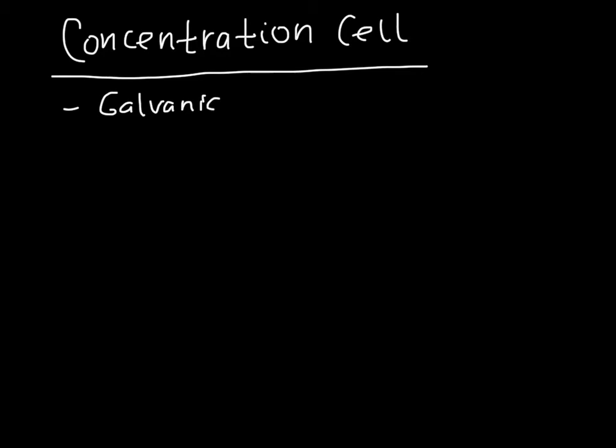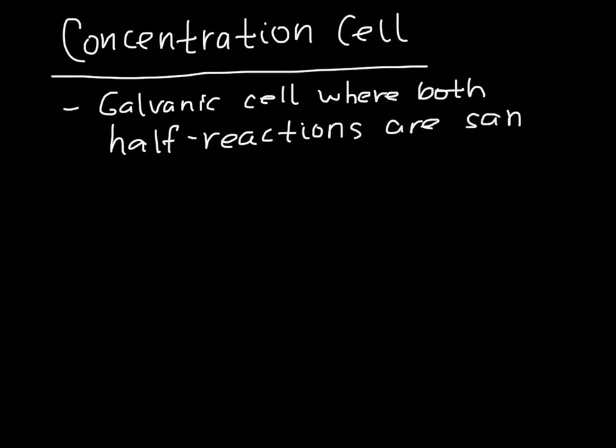Let's consider what's called a concentration cell. This is a galvanic cell in which both of the half reactions are the same, it's just that they have different concentrations, which is where it gets its name. So the difference in concentrations is what drives the flow of current.